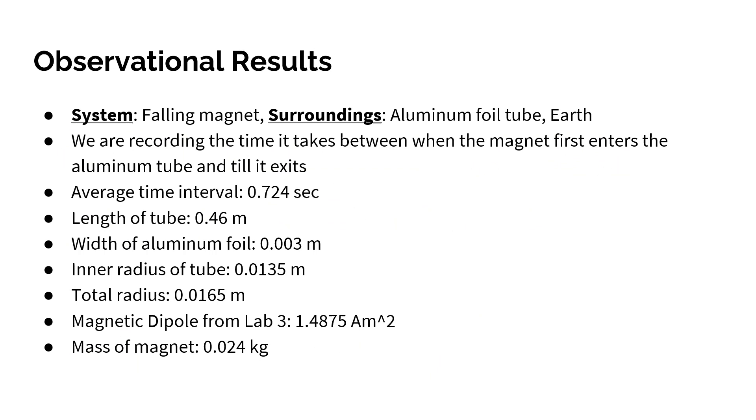For this experiment, the system includes the falling magnet. Surroundings include the aluminum foil tube and the Earth. For the experiment, it entails that we're going to be taking the time between when the magnet first enters the tube to when it exits.